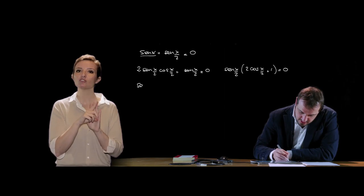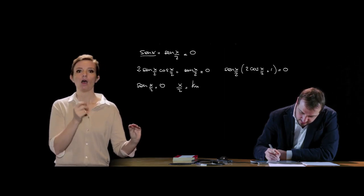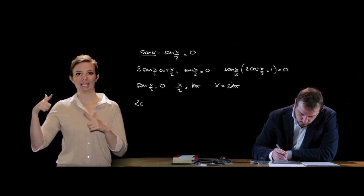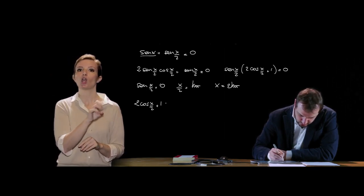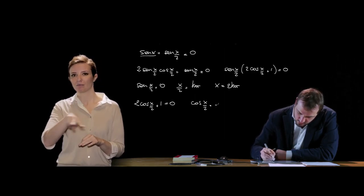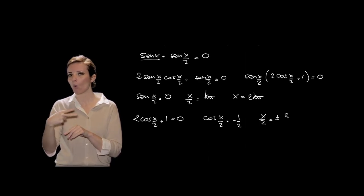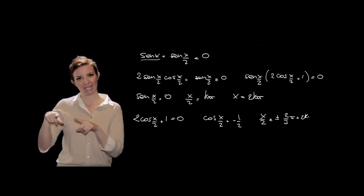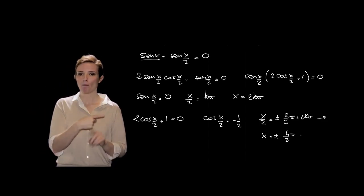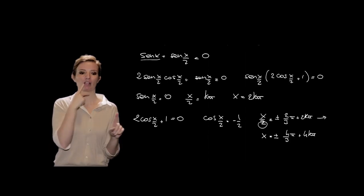Per la legge dell'annullamento del prodotto: sen(x/2) = 0 implica x/2 = kπ, cioè x = 2kπ. Invece 2 cos(x/2) + 1 = 0 implica cos(x/2) = −1/2, quindi x/2 = ±(2π/3) + 2kπ, e moltiplicando per 2: x = ±(4π/3) + 4kπ.